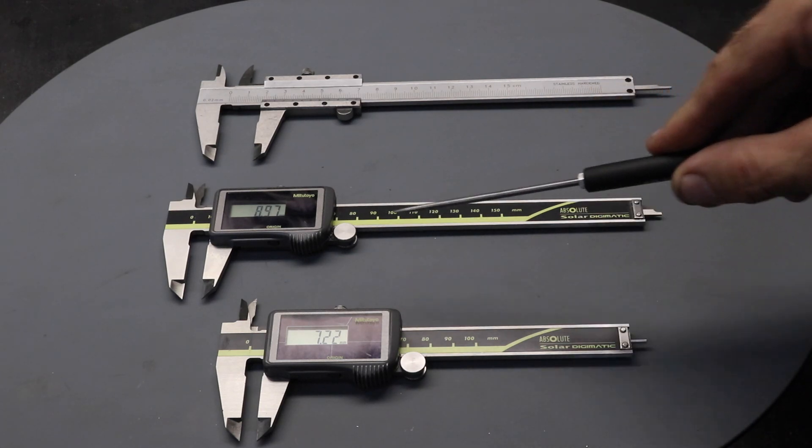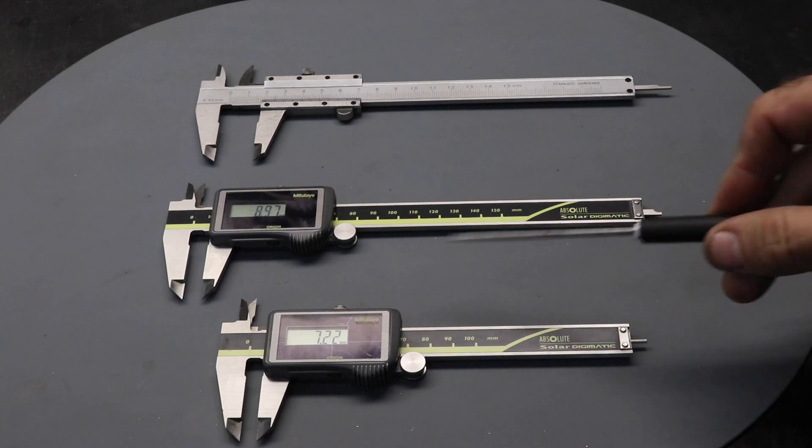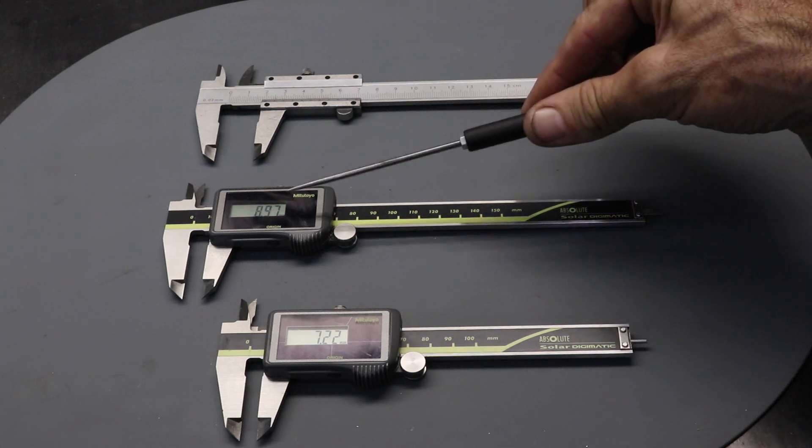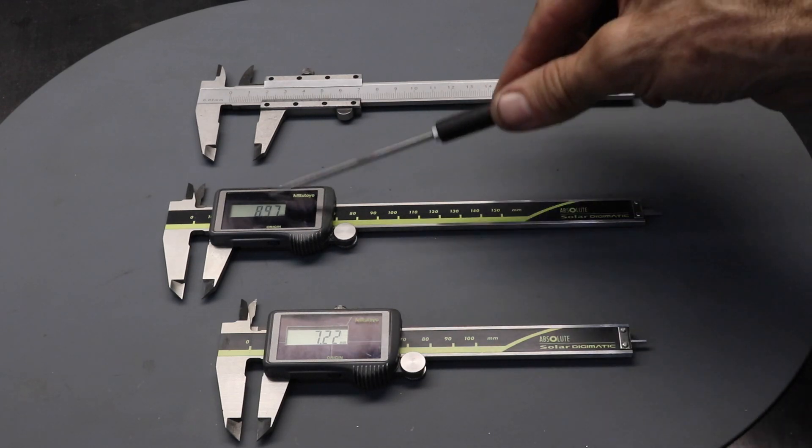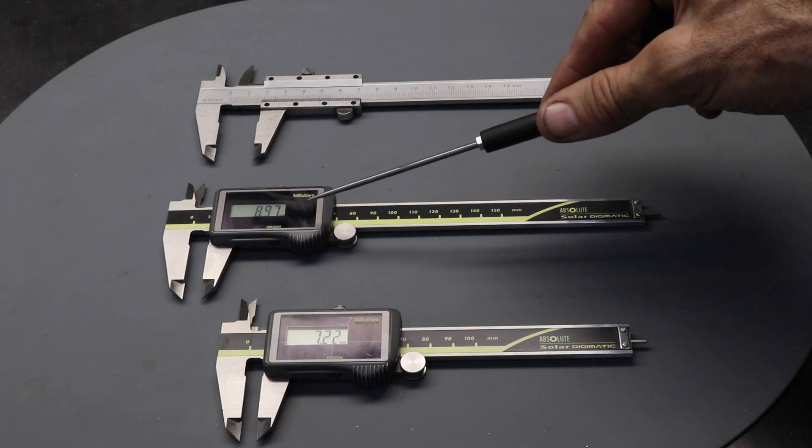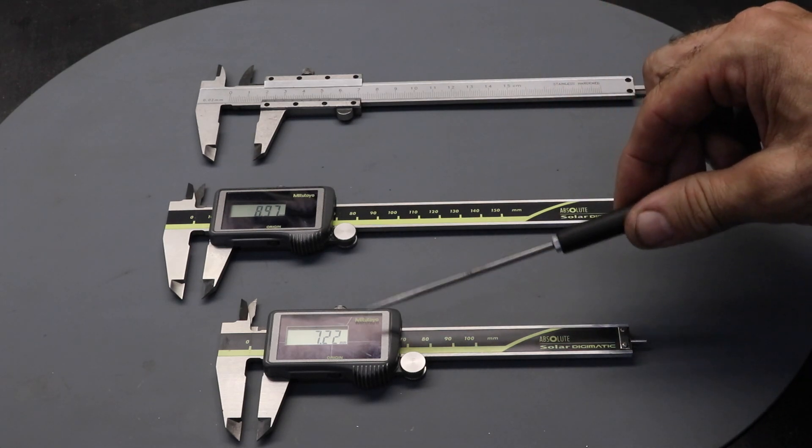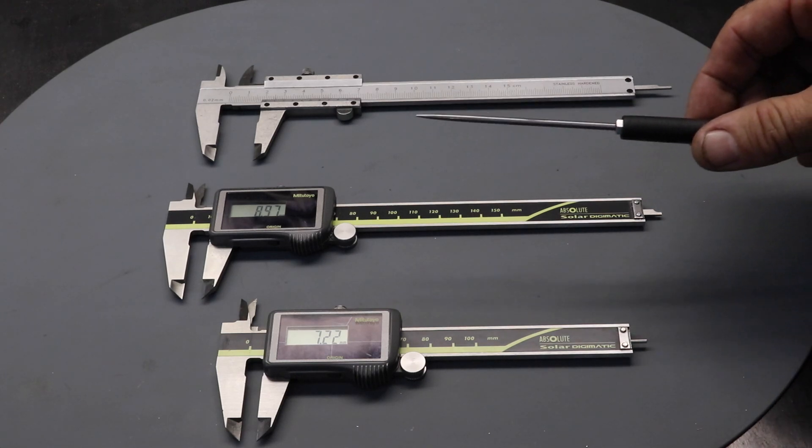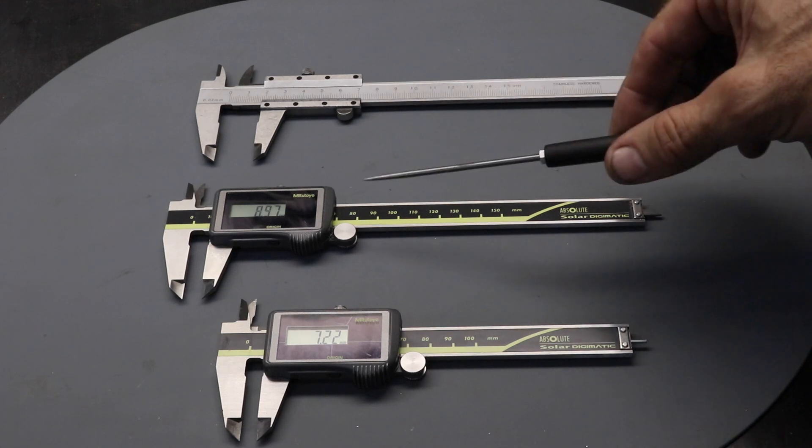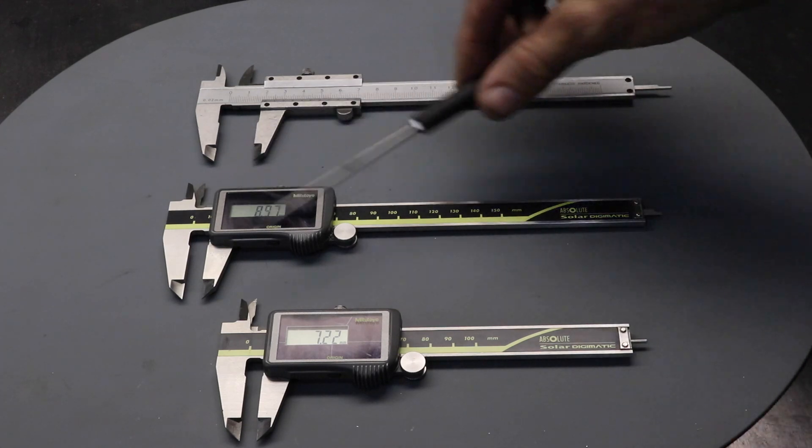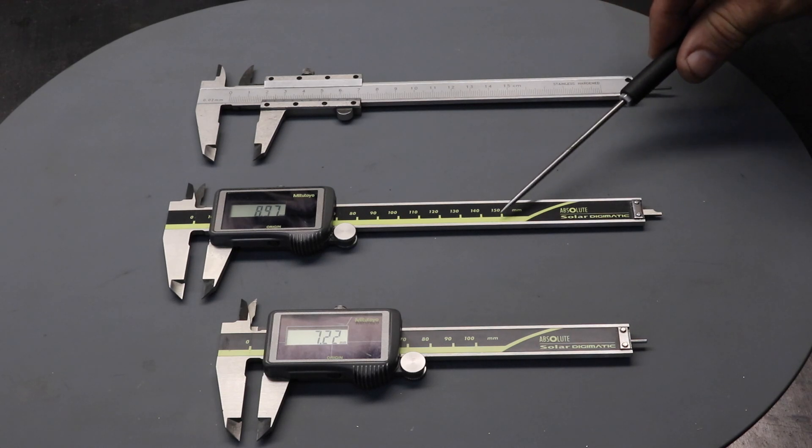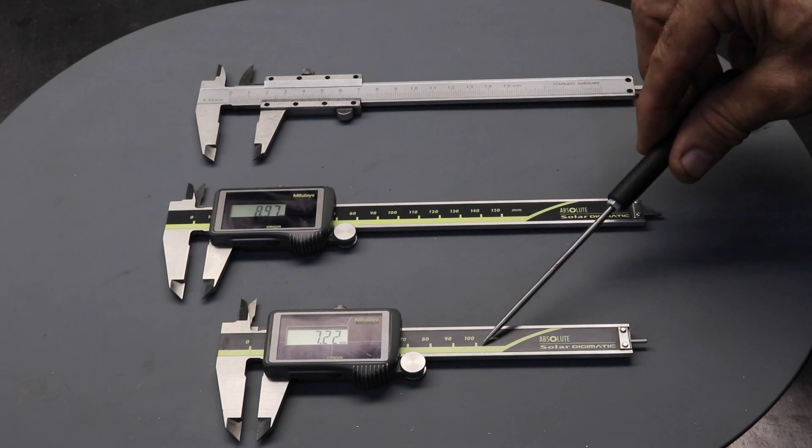Below are two digital calipers, both made by Mitsutoyo and very easy to use, nice display. These actually both have a solar panel which will run off indoor lighting. I've had these for probably five years or so and still working great. No battery to change. I really like these. The only difference between these two is the length. This one measures up to 150 millimeters and this one up to 100 millimeters.